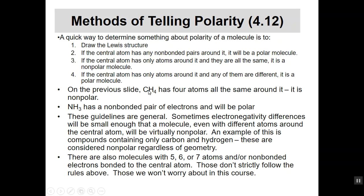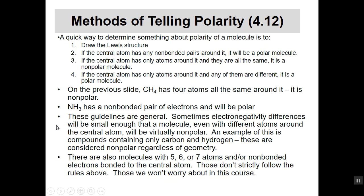How can you tell if a molecule is polar or nonpolar? Here are some simple guidelines. Draw the Lewis structure: if the central atom has any non-bonded pairs around it, the molecule will be polar. If the central atom has only atoms around it and they are all the same, it's nonpolar. But if the central atom has only atoms around it and any of them are different, it's a polar molecule. For example, CH4 has four identical atoms — nonpolar. Ammonia has three identical atoms but also a lone pair, so it's polar.